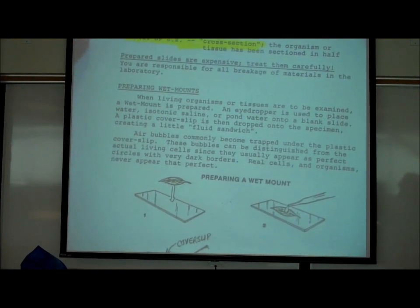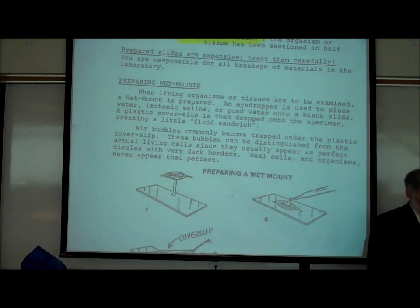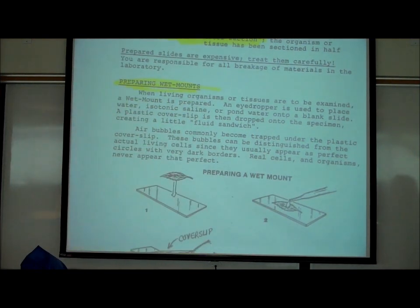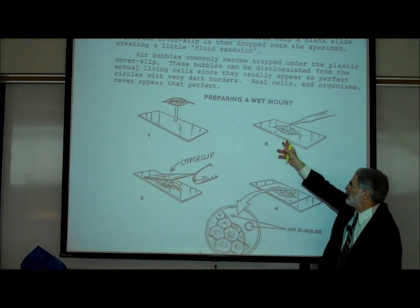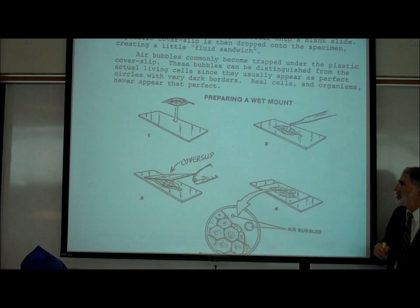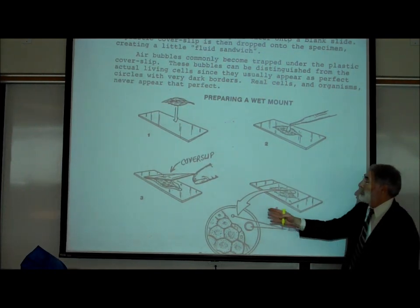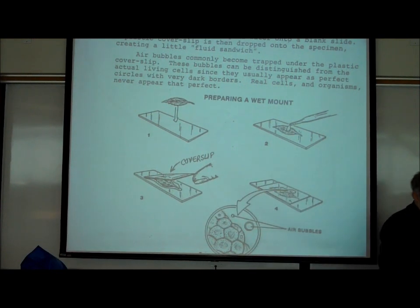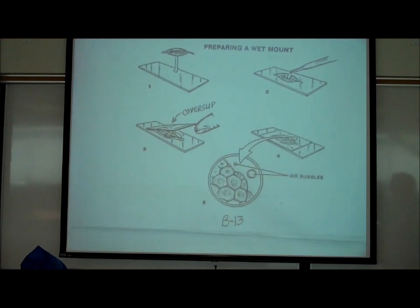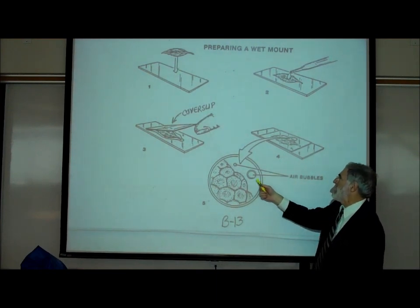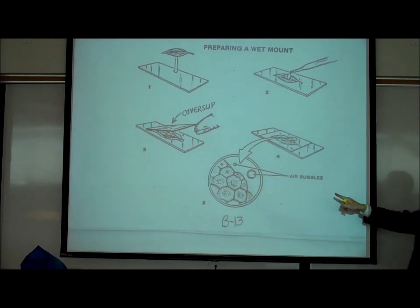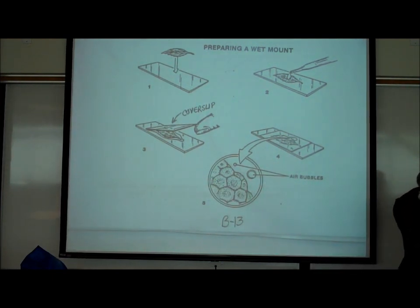When we look at something alive, we usually put water on it — that's called a wet mount — because without water, it will die. When preparing a wet mount, you place a cover slip on top to keep the water from moving off the slide. Whenever you drop a cover slip onto a slide with water, you always get some air bubbles. If you see perfect circles, those are not cells — they are air bubbles from the wet mount process.